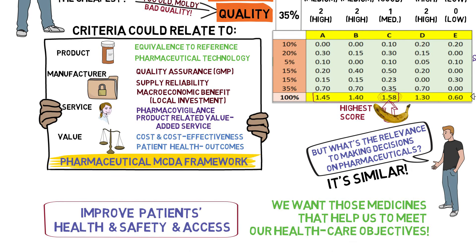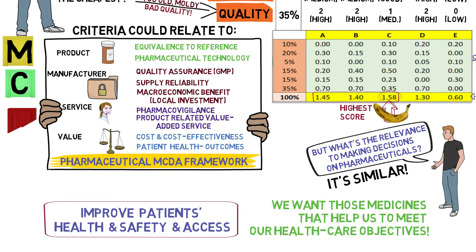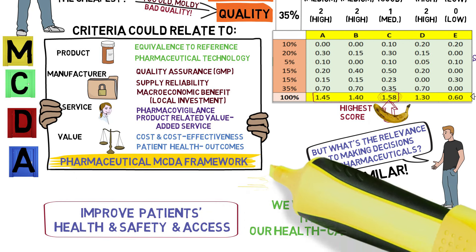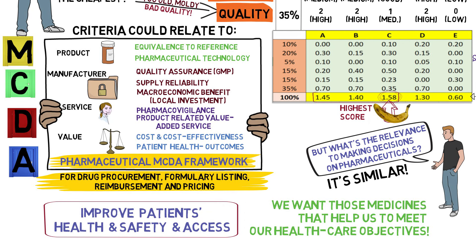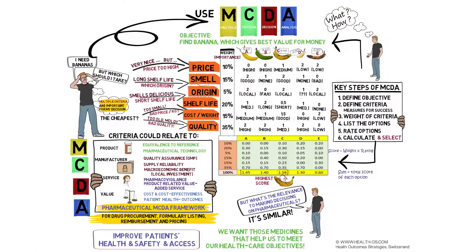With this, you can build your MCDA framework. Together with the stakeholders concerned by your decision, you weight the importance of your criteria. Then you can test and use the evaluation to assess which of your options performs best versus your criteria. MCDA offers a well-structured decision process for drug procurement, formulary listing, reimbursement, and pricing, which is robust and transparent towards all stakeholders.